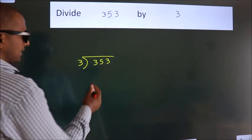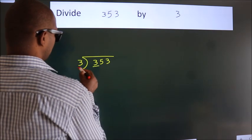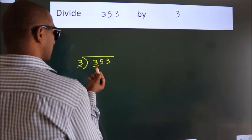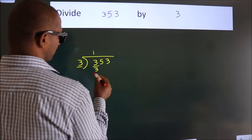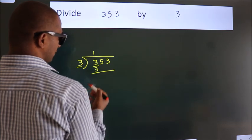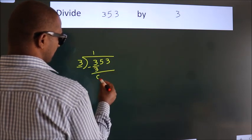Next. Here we have 3, here 3. When do we get 3? In 3 table, 3 once, 3. Now, we should subtract. We get 0.